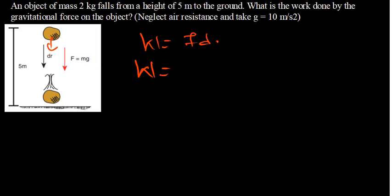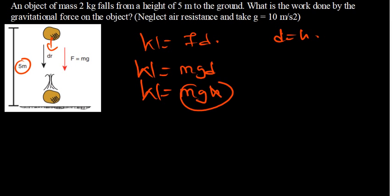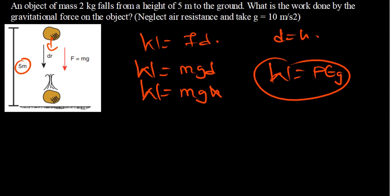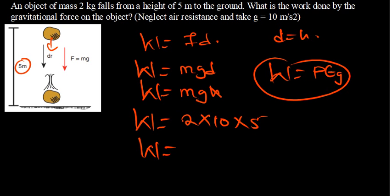The work is going to be mg times d. Now, the distance we're talking about here is the height, so I'm going to replace d with the height. We know that this is basically potential energy. So the work done by the gravitational force — we have the mass: 2 times g, which is 10, times 5. So the work done by the gravitational force is 2 times 10 times 5, which is 100 joules.